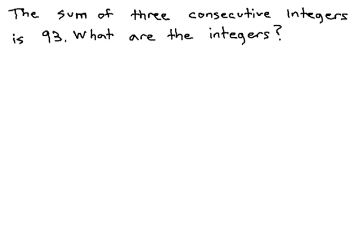In this video, we're going to take a look at consecutive integers and how we can find them if we are given the sum. Here, we are told that the sum of three consecutive integers is 93, and we're asked to find what are the integers.